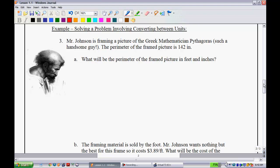Let's move on to our last couple of examples here. This is going to be an example of unit cancellation or analysis. Mr. Johnson is framing a picture of the Greek mathematician Pythagoras. The perimeter of the frame picture is 142 inches. What will the perimeter of the frame picture be in feet and inches? I know this is not too tough, but past classes I've had in this course have struggled with it. These questions do get a little bit more daunting.